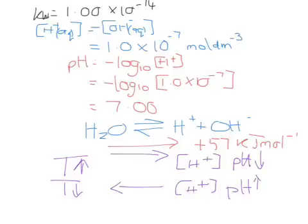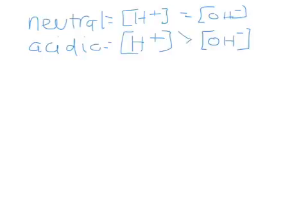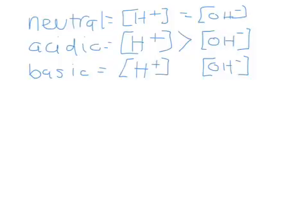This is quite important to remember — you often get asked about increasing and decreasing temperature in equilibrium reactions. Remember that neutral actually means the hydrogen ion concentration is equal to the concentration of the hydroxide ions. Acidic means there are more hydrogen ions and the pH will be lower. Basic means there are more hydroxide ions and the pH will be higher. Just remember that pH 7 doesn't necessarily mean neutral.